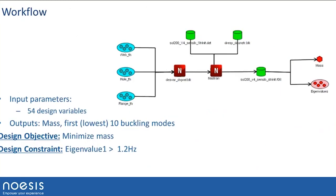That's the identification of inputs and outputs. Here we build the workflow, which is very straightforward. On the left side, three sets of inputs for web, hole, and flange thicknesses modify the bulk file parameters. In the middle icon, we run MSC Nastran Sol 105. From the F06 output, we extract the mass and eigenvalue — the first 10 buckling modes — with a constraint that each must be higher than 1.2.